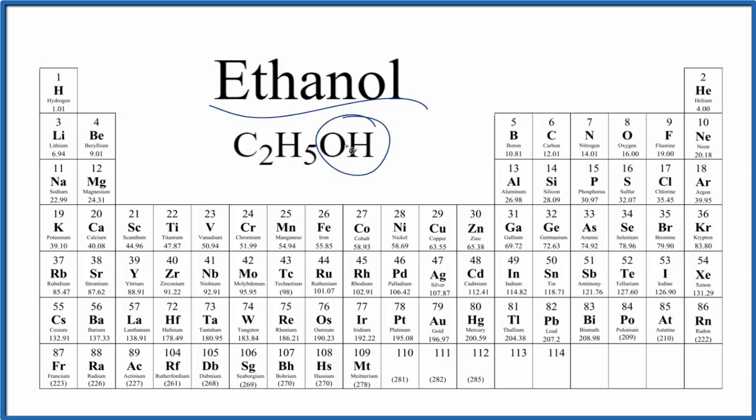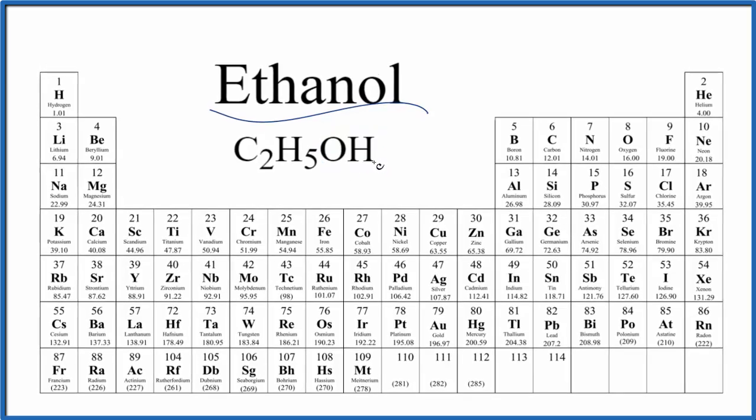The reason we write it this way is ethanol is an alcohol. Alcohols have an OH group bonded to one of the carbons. Because of this OH group, we put this on the end to show that this is an alcohol. So let's find the molar mass for ethanol.